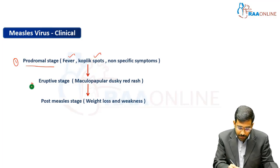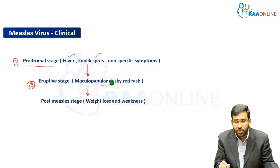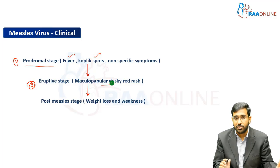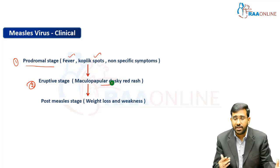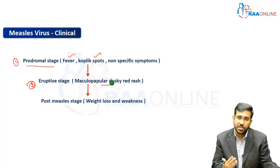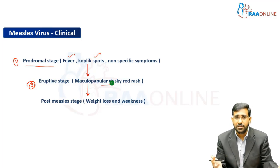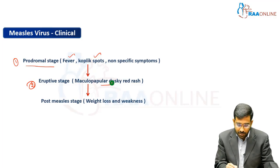Following the prodromal stage, there is going to be the eruptive stage. In the eruptive stage, there is going to be a dusky red maculopapular rash. In case of any exanthematous fever, this kind of appearance plays an important role and gives us a clinical clue for treatment. If the lesion is vesicular, it is caused by something like varicella or herpes. If it is a maculopapular rash, it gives us an idea of measles infection.